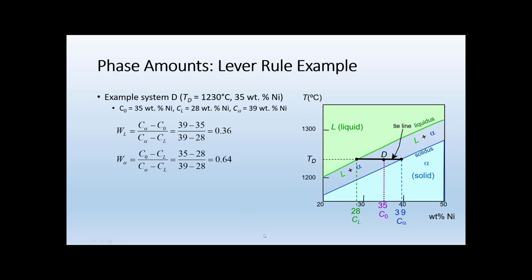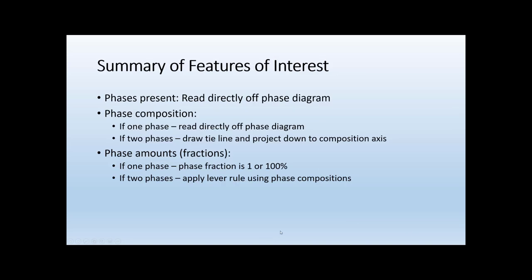To summarize the three features of interest: for phases present, we use the composition and temperature and read directly off the phase diagram. For phase composition, if there's only one phase we read it directly; if there are two phases, we draw a tie line and project down to the composition axis. For phase amounts, if there's only one phase the fraction is 100%; if there are two phases, we apply the lever rule using the phase compositions we've already computed. That's really all there is to most of the analysis of these phase diagrams.